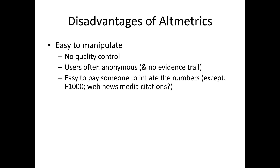Altmetrics also have major disadvantages. The most important is that they're almost all easy to manipulate and have no quality control. Users are often anonymous, leaving no evidence trail — either no evidence trail at all in the case of Mendeley, or a weak one in the case of Twitter. It's easy to pay someone to inflate the numbers. So altmetrics are not a robust source of evidence in general.